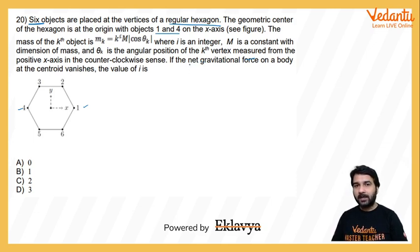If we place a body at the centroid, that is at the origin, then in that case the net gravitational force on it becomes zero. If this happens, then what could be the value of i? So this is our question.